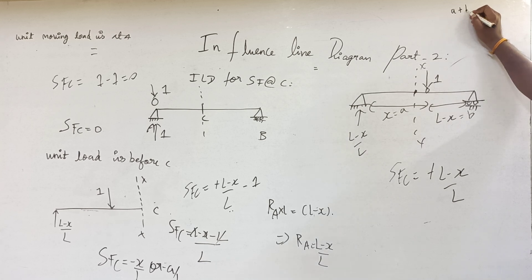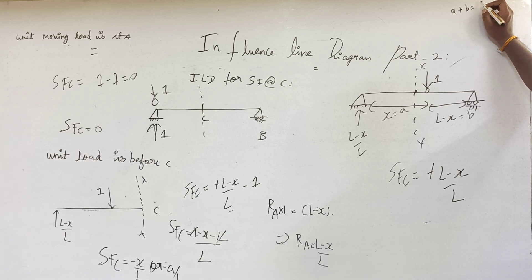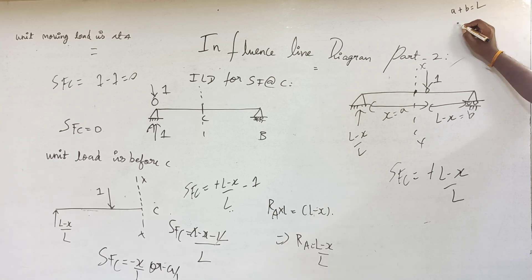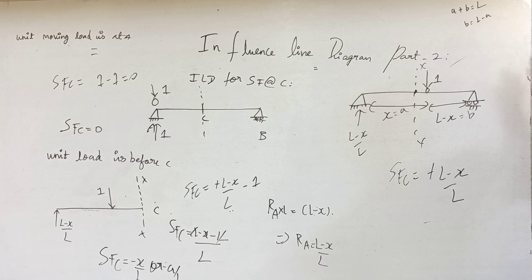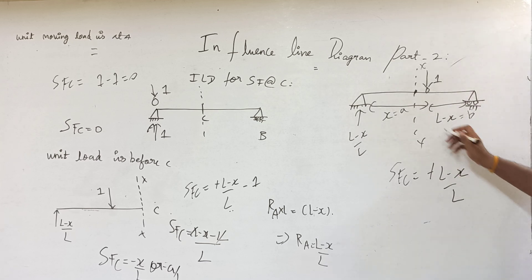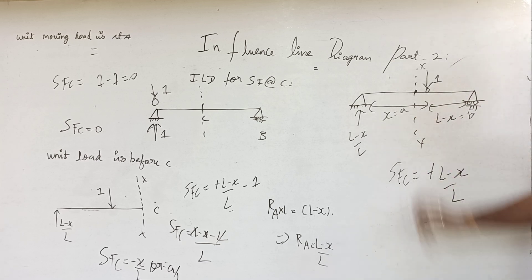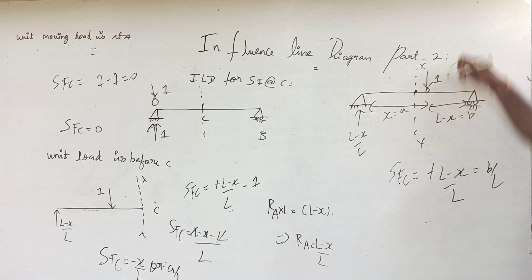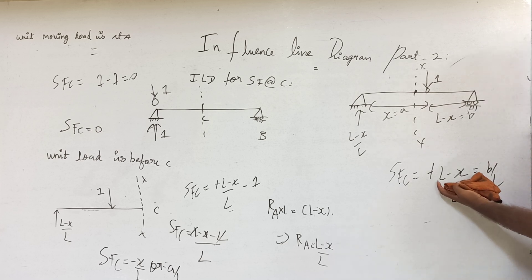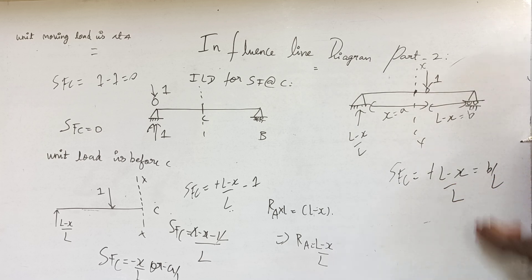Since A plus B equals L, B equals L minus A. On the left side, L minus x will be B and x will be A. So L minus x equals B by L. Therefore shear force at C when the unit load has just crossed C equals (L minus x) by L, or plus B by L.